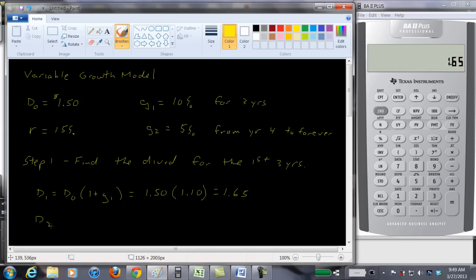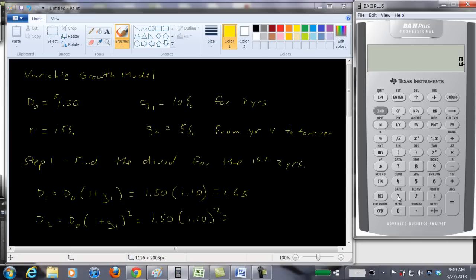And then the dividend in year two is going to be equal to D0 times one plus this growth rate squared. So it's going to be a dollar and a half times 1.10 squared. And let's see what we get there. 1.1 raised to the second power is 1.21 times $1.50 and we get $1.81 and a half. So let's round up to $1.82.